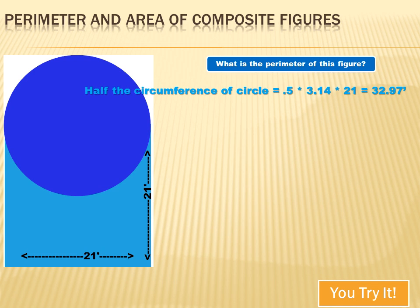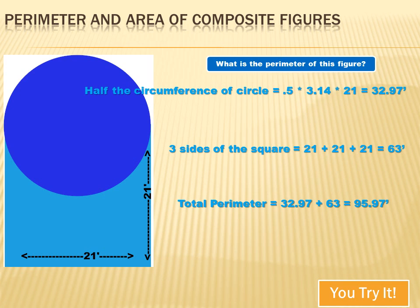Half the circumference of the circle would equal 0.5 pi d, or 0.5 times 3.14 times 21, or 32.97 feet. Three sides of the square would equal 21 feet, plus 21 feet, plus 21 feet, or 63 feet. And when I total those two dimensions together, I get 95.97 feet.